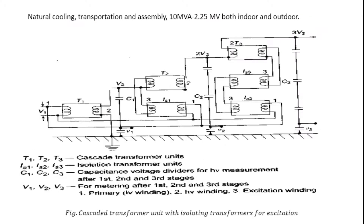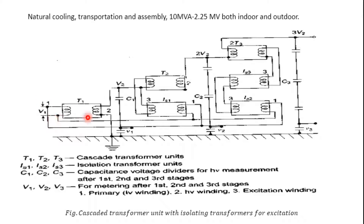Another type of cascade transformer uses identical transformers to achieve a rise in voltage across the output. This has IS1, IS2, and IS3 — different types of transformer units. These act as isolated transformers. The input is from the motor generator set V1, and the same input voltage is given to each transformer similarly.